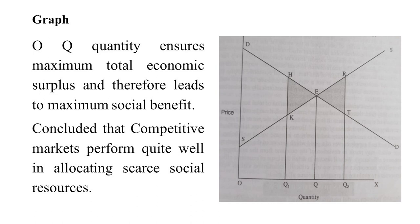You can see on the graph that when we reduce the quantity from OQ to OQ1, there is a loss for producer surplus, shown by the shaded area. When we increase the quantity beyond OQ, demand is lower at that point and supply is more, so demand is less than supply.